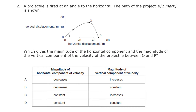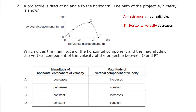An almost identical problem here. We've got the projectile path at horizontal. However, we are now not assuming that air resistance is negligible — the reason we know that is because the shape is asymmetric. In the case that air resistance is not negligible, our horizontal velocity is going to decrease, because the air resistance acts in opposition to our motion. So therefore, we can rule out two of our answers, C and D.